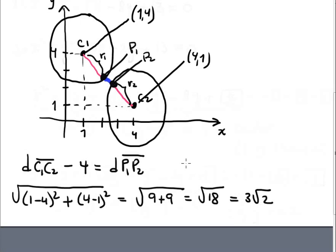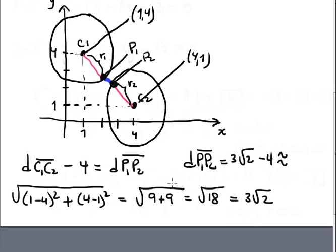So basically the final answer is that the distance P1 to P2 is 3 radical 2 minus 4. This is approximately 0.2641 from the calculator.